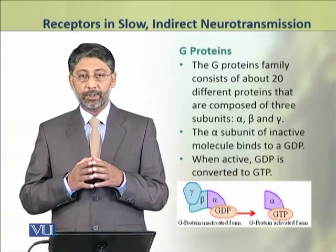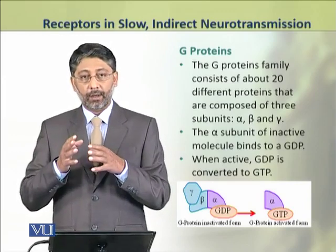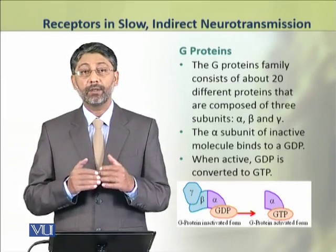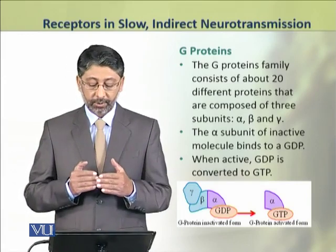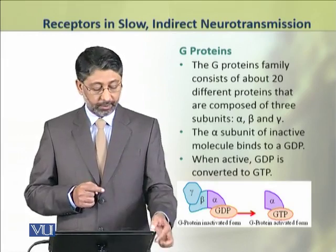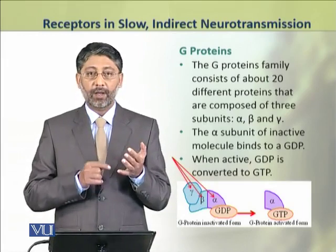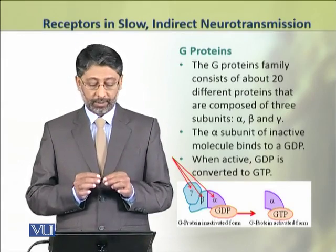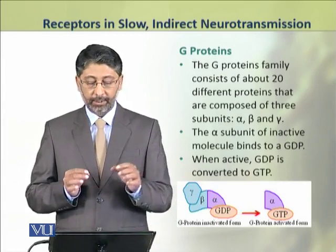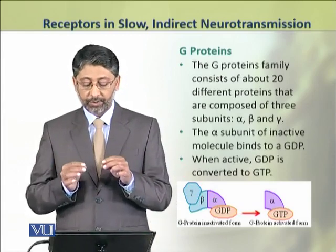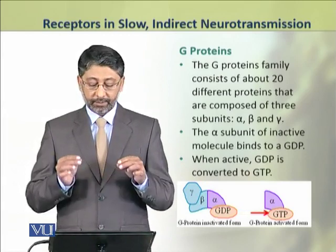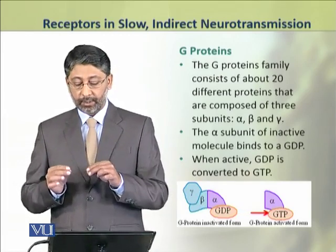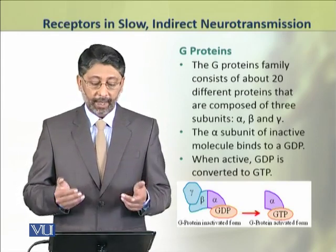G proteins are a large family of proteins consisting of about 20 different types, composed of three subunits: alpha, beta, and gamma. The alpha subunit of the inactive molecule binds to GDP. When this GDP is converted into GTP, the protein becomes active.